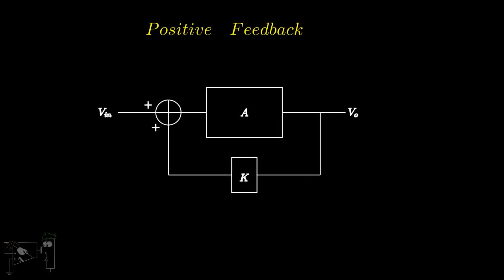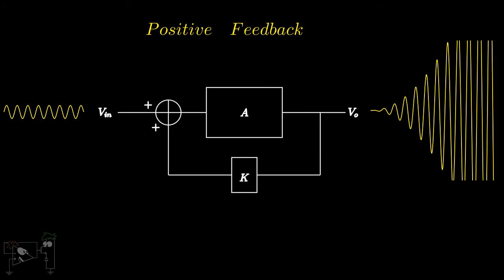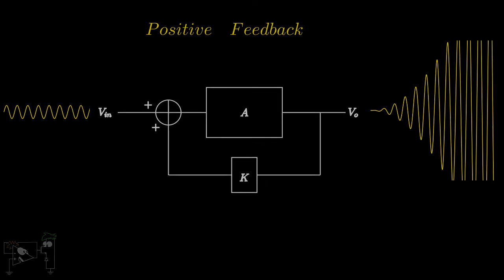If an op-amp is connected in a positive feedback system, the virtual ground condition does not hold, as in this case there is no control over the output and the output ends up saturating. There are some uses of positive feedback configurations too, but we'll take a look at those much later in the course.